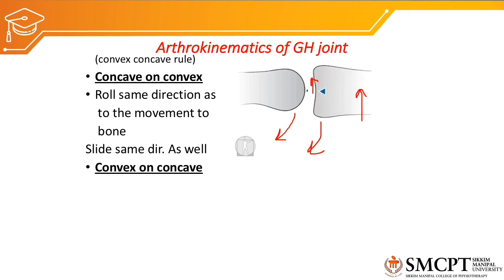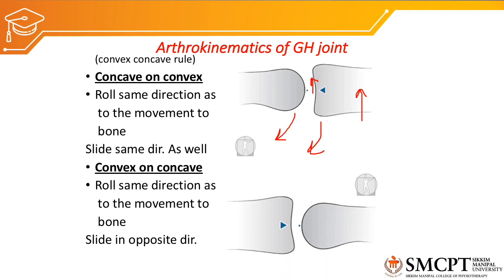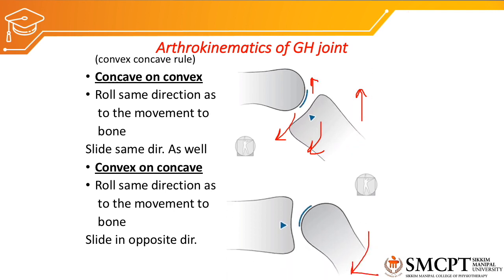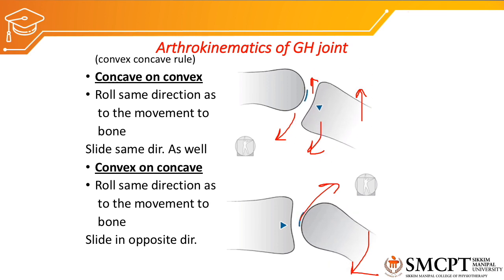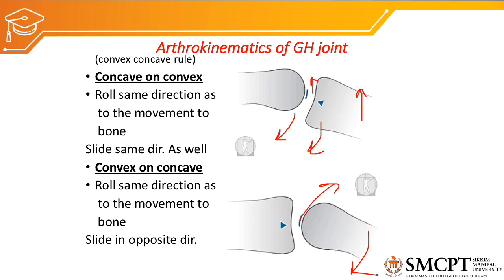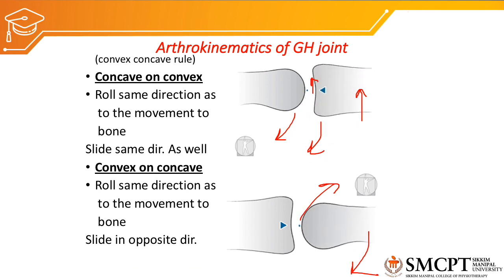When a convex surface moves on a concave surface, the sliding will be in the opposite direction. As you can see in this animation, when the bone is moving downward, sliding is upward. When the bone is moving upward, sliding is downward. So when convex moves on concave, sliding is always in the opposite direction to the movement of the bone.